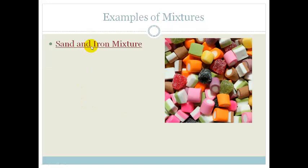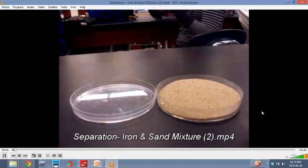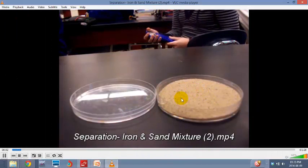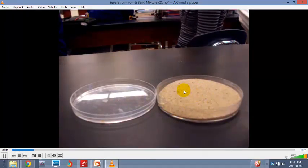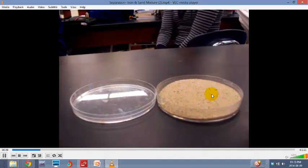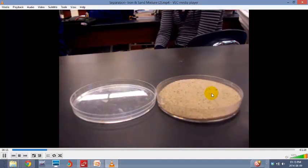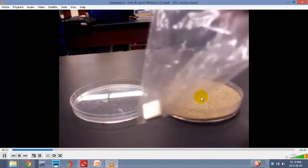Now let's look at a sand and iron mixture. Here we have got a mixture of sand with some iron filings in it. And what we can do is because iron filings are magnetic, we can actually use a magnet to remove the iron filings.